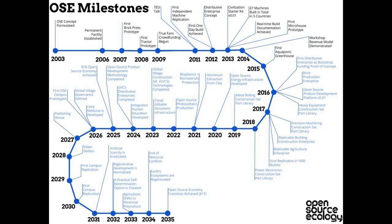By 2032, the visionary goal would be to normalize regenerative development — the earth is no longer getting destroyed and pillaged of its natural resources, biodiversity, or human cultural diversity. By that time, regenerative development is the norm, a viable alternative to business as usual. And a practical self-determination option is created — meaning each person's ability to create the full life that they want, not alienating their whole life to make a living, but pursuing their true dreams.